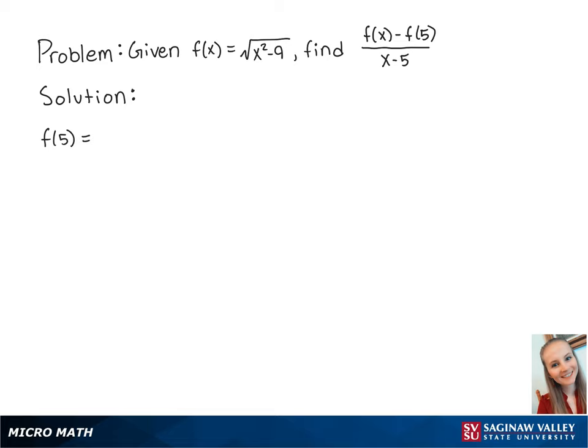First, we're going to find f of 5, which is equal to the square root of 5 squared minus 9, which is equal to the square root of 16, which equals 4.